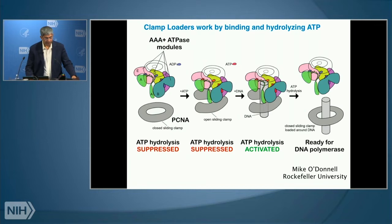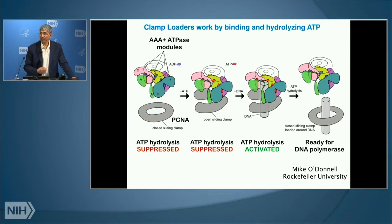The DNA polymerase sliding clamp loader is a complex of five different proteins labeled A, B, C, D, E. They are ATPases of the AAA-plus family and bind ATP — the action of the molecular machine is based on the ability to hydrolyze ATP. Today I'll be talking about one specific clamp loader: the T4 phage clamp loader system.